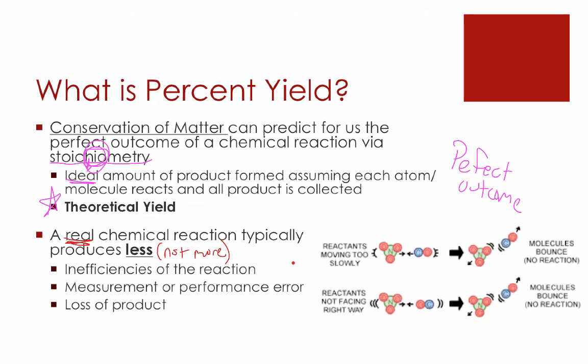There's a lot of reasons your real chemical reaction might produce less: inefficiencies of the reaction itself. This diagram over here is showing that. For example, if molecules simply aren't moving fast enough, they might not collide together with enough energy to cause a reaction to occur. And maybe certain chemicals are very selective about the angles at which they collide with one another to make these reactions occur. And as a result, the wrong angles can prevent a reaction. The less product could be from measurement or performance error, i.e. your measuring devices or what you actually do in the experiment, or simply loss of product via either mistakes or the actual nature of the reaction itself. And I think we saw some of that in the magnesium oxide lab we recently performed.